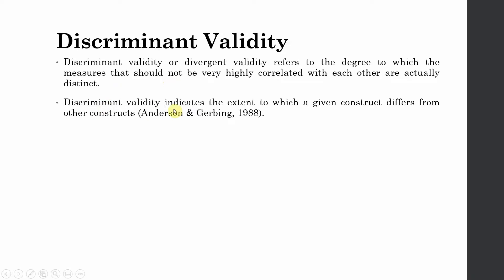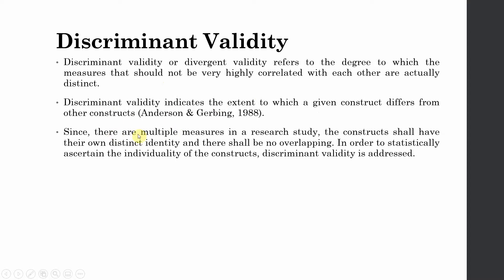Discriminant validity indicates the extent to which a given construct differs from other constructs in the study. Since there are multiple constructs in a research study, the constructs shall have their own distinct identity and there shall be no overlapping. In order to statistically ascertain the individuality of the constructs, discriminant validity is addressed or established.